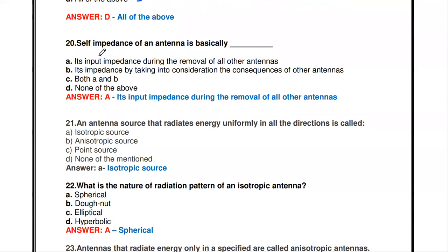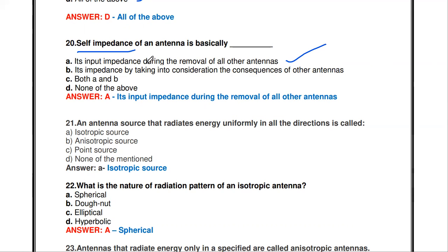The next question: self-impedance of an antenna is basically — input impedance during removal of all other antennas, impedance taking into consideration the consequence of other antennas, both A and B, or none? The first option is correct. Self-impedance is the input impedance measured for a particular antenna when all other antennas are removed.